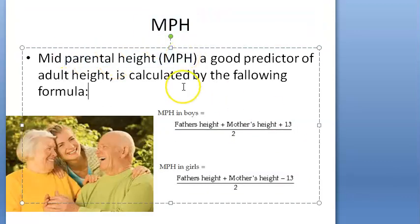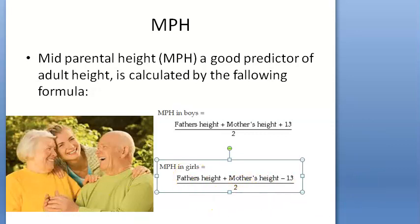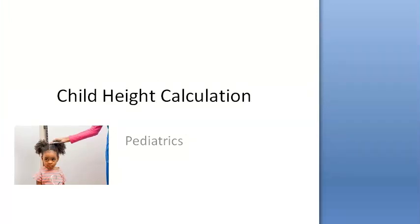Mid-parental height is a good predictor of adult height. For boys: (father's height + mother's height + 13) ÷ 2. For girls: (father's height + mother's height − 13) ÷ 2. Remember: 77 is the constant in the age formula, and 13 is used in the mid-parental height formula. The 50th percentile is considered normal.